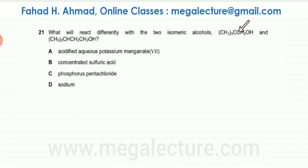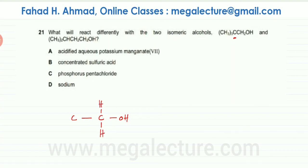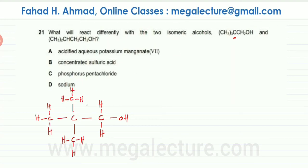Looking at the first molecule, I'll focus on the middle carbon atom. On one side there is a CH2 and an OH group attached, meaning two hydrogens on that carbon. On the left side of that central carbon atom, there are three CH3 branches attached to it. Here you can see the three CH3 branches drawn around that carbon atom.